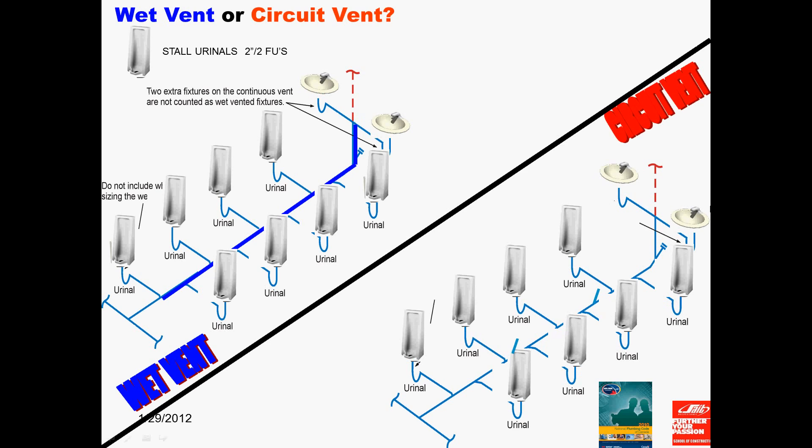Yes, only seven urinals and two labs are affecting the size of the wet vent, as the last urinal is draining downstream of the wet vent into the branch. Hence, let's size the wet vent. Seven urinals, or 14 fixture units, plus two labs, or two fixture units, equals a total of 16 fixture units draining into the wet vent.